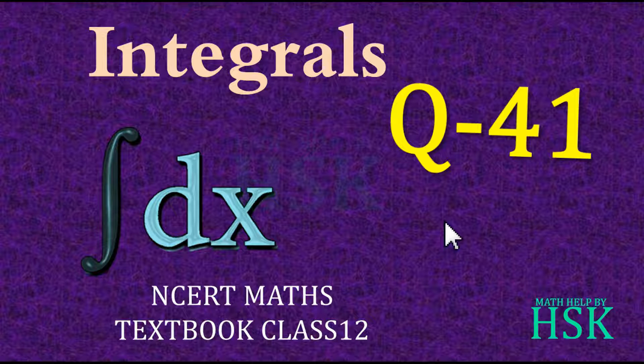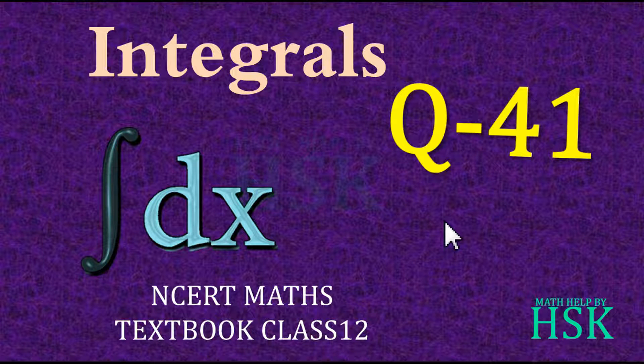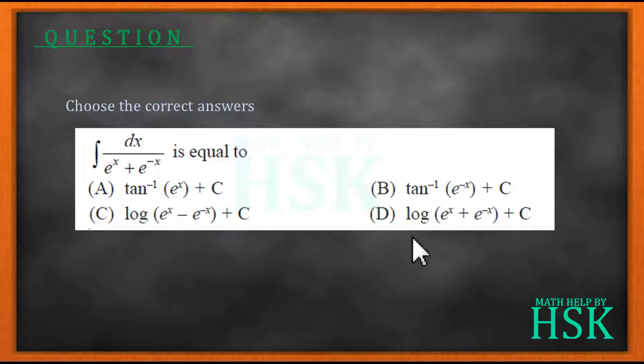Taking question number 41 of the miscellaneous exercise of chapter 7. The question is like this. This is an objective question and we have to choose the correct answer. So integration of dx upon e to the power of x plus e to the power of minus x is equal to how much?